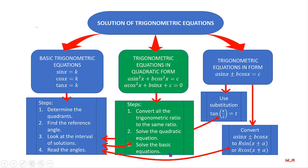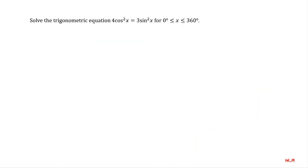Let's look at the first example. We want to find the solutions for 4 cosine squared of x equal to 3 sine squared of x, where the interval of solution lies between 0 to 360 degrees, included.